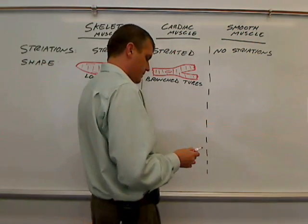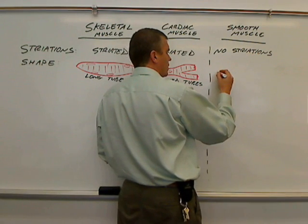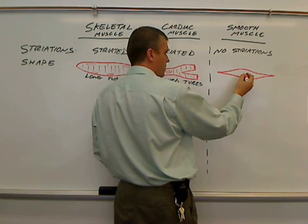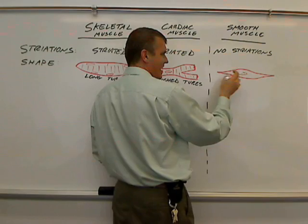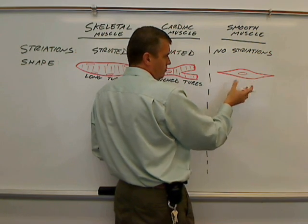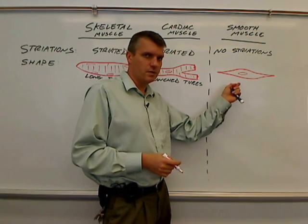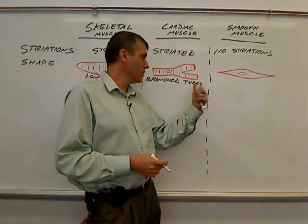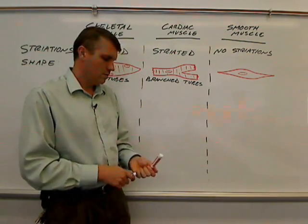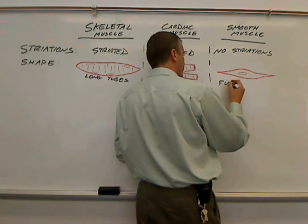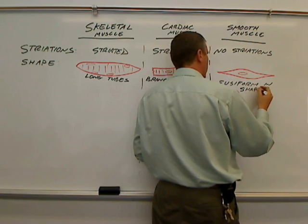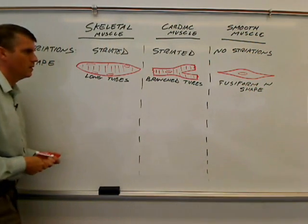For smooth muscle, it has more of a fusiform, spindly shape — thin on its ends and thicker in the middle. That's the fusiform shape. Another thing about smooth muscle is the fibers tend to be smaller than what we see in skeletal muscle and also in cardiac muscle.